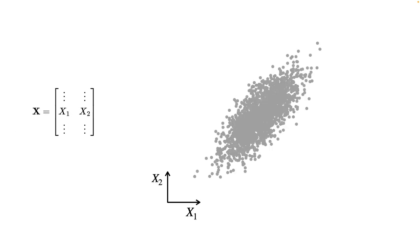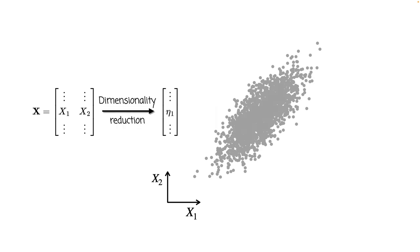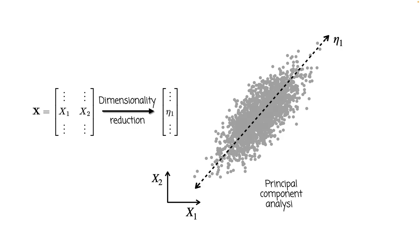Imagine a dataset that is an elongated cloud of points like this one. This dataset is two-dimensional, defined by two variables x1 and x2. What if we wanted to reduce its dimensionality down to one dimension? What would be the best way to represent this cloud of points by just one variable, eta1? Well, if we performed principal component analysis on this dataset, we would find this direction as the best one-dimensional subspace.